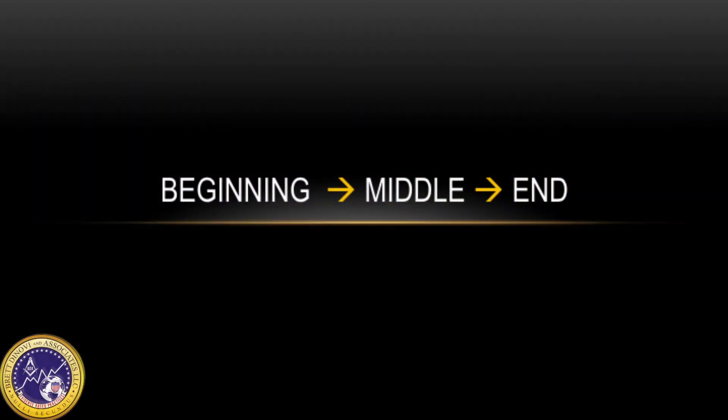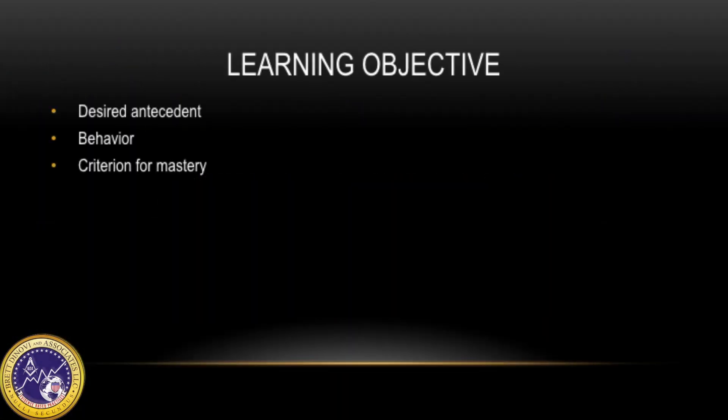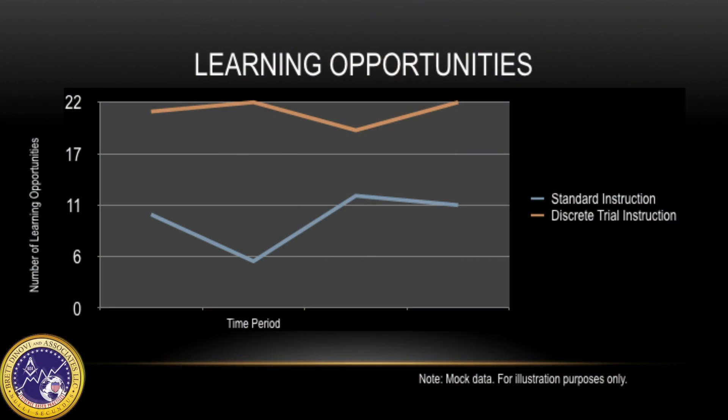DTT format relies on discrete behaviors which have a clear beginning, middle, and end. The learning objective needs to clearly state the desired antecedent, behavior, and criterion for mastery. Discrete trial is used often in the treatment of people with autism since they tend to have difficulties gaining and maintaining attention to stimuli in their environment. Because each discrete trial is short, there are more learning opportunities in a given period of time than standard instruction.